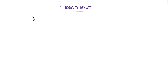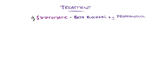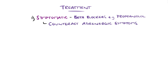Symptomatic treatment includes the use of medications like beta blockers, for example propranolol, typically in the early stages until more definitive treatment is achieved. These help counteract the adrenergic symptoms such as palpitations, tachycardia, and tremor.